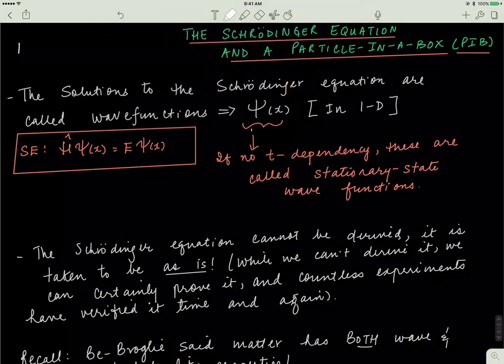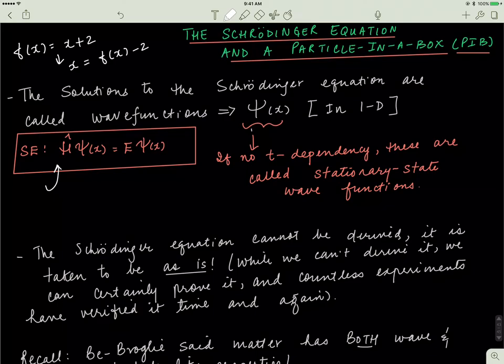Say we have an equation f of x equals x plus 2. Then we know that the solutions to f of x are in the form of x. Similarly, the Schrödinger wave equation is in this form, and the solutions to the Schrödinger wave equation are in the form of ψ of x in one dimension. If it was in 2D it would be ψ of x and y; if in three dimensions, ψ of x, y, and z. If there's no t, that means there's no time dependency with ψ, and we say these solutions are called stationary state wave functions.